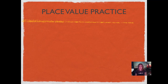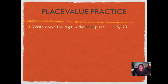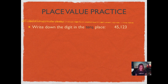Here's our place value practice, because we need to know our place value when we're rounding. It's probably the one thing that's going to make the biggest difference on whether we get our rounding problems correct. Write down the digit in the tens place in that problem: 45,123. Did you write two? If we sing the place value song starting after the ones position — ones, tens — we stopped on the two, so we know the two is in the tens place.